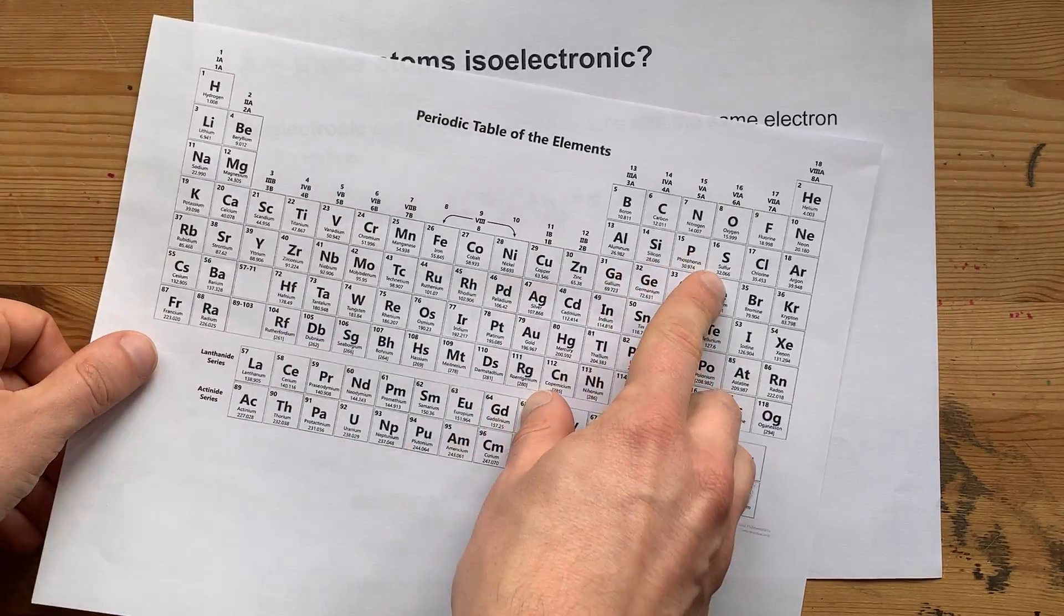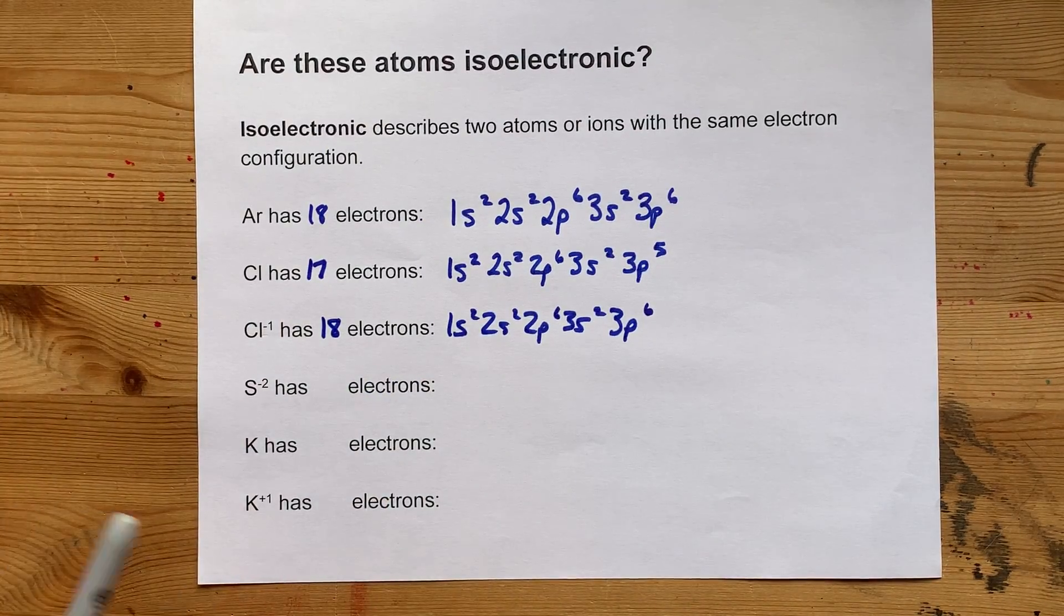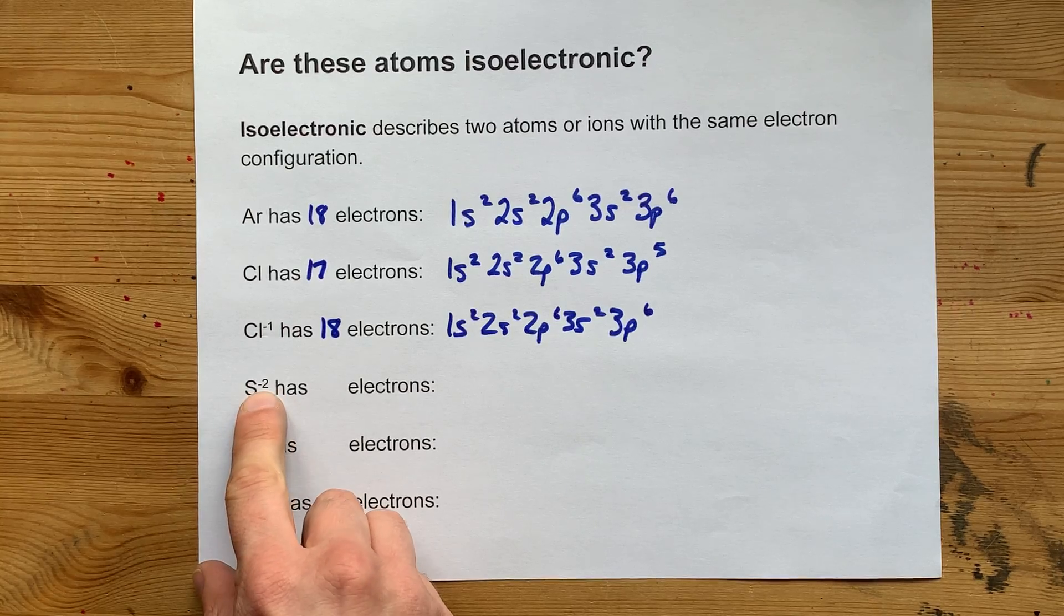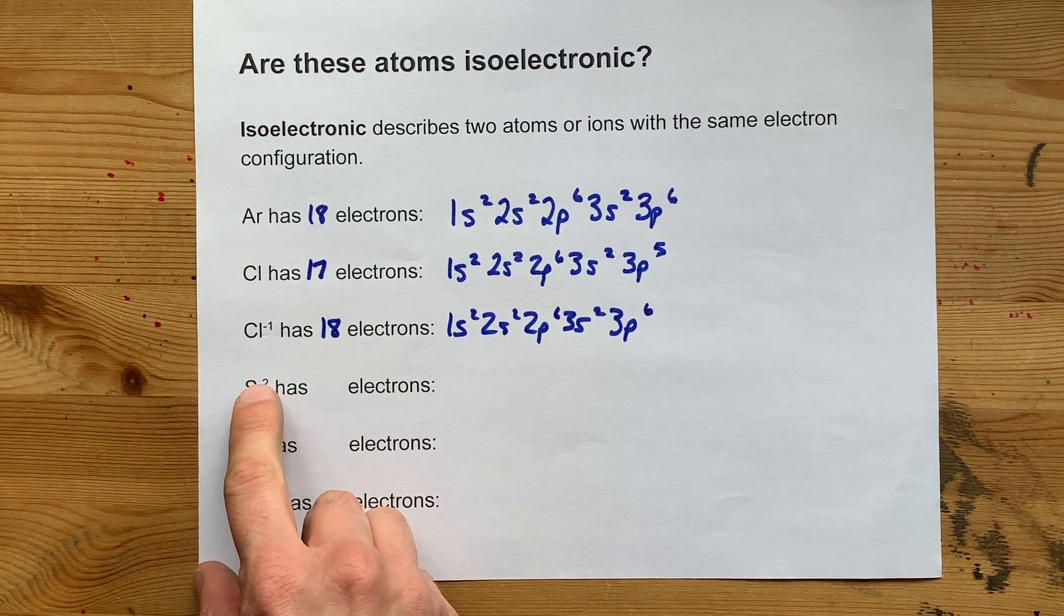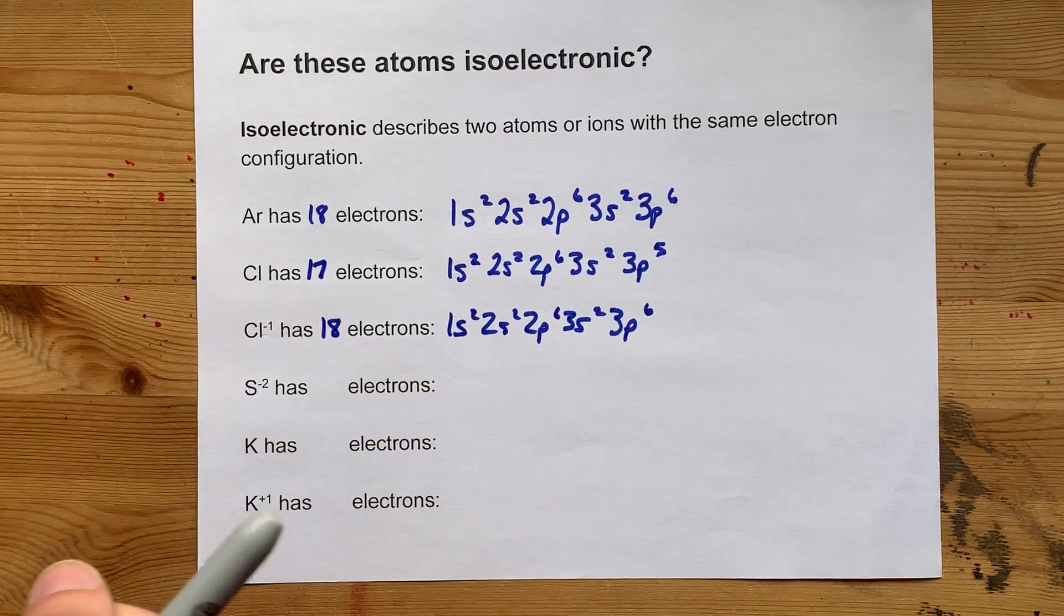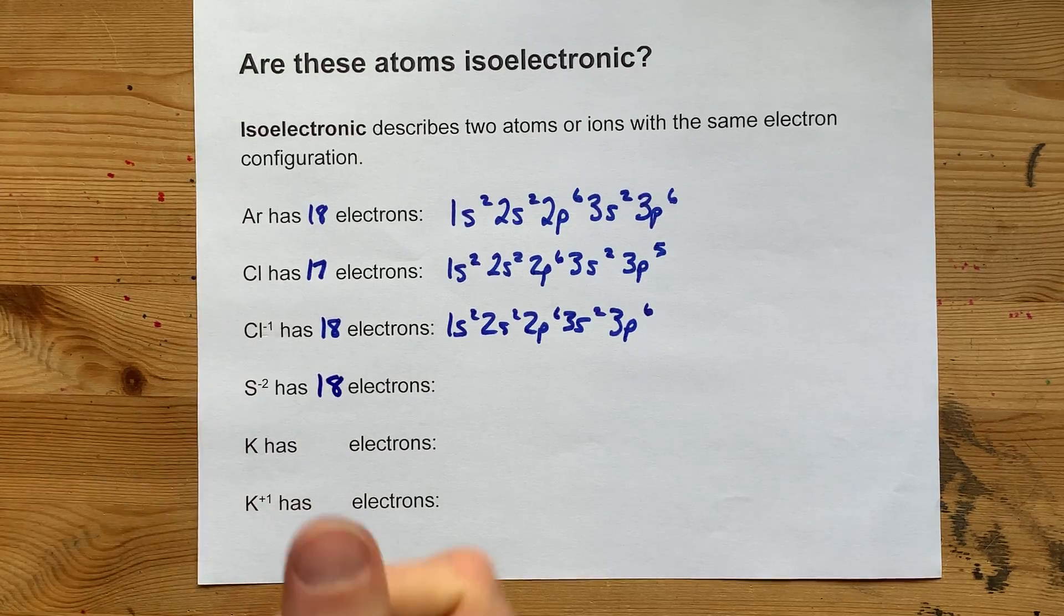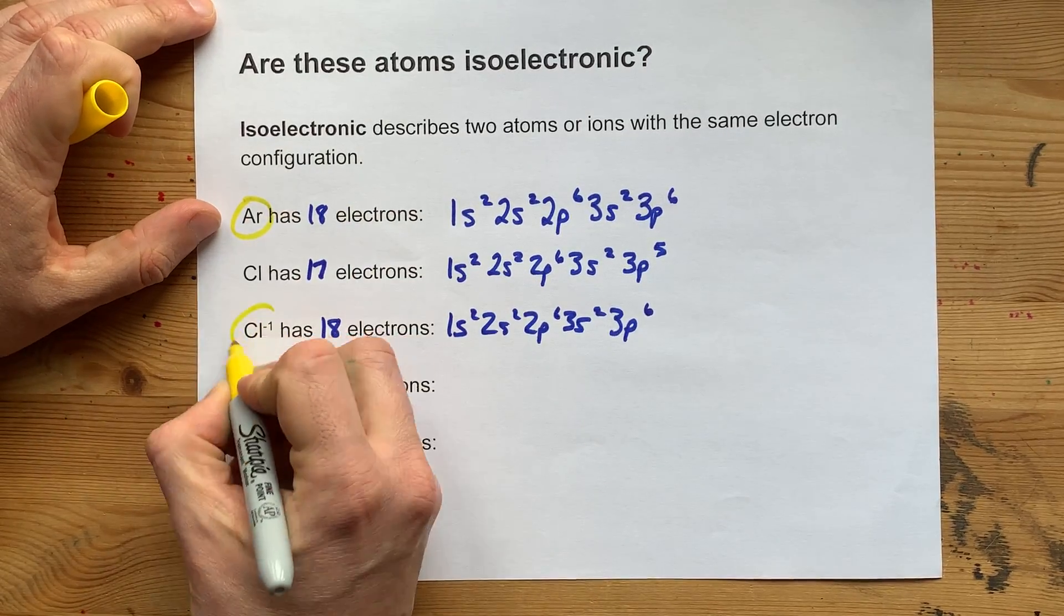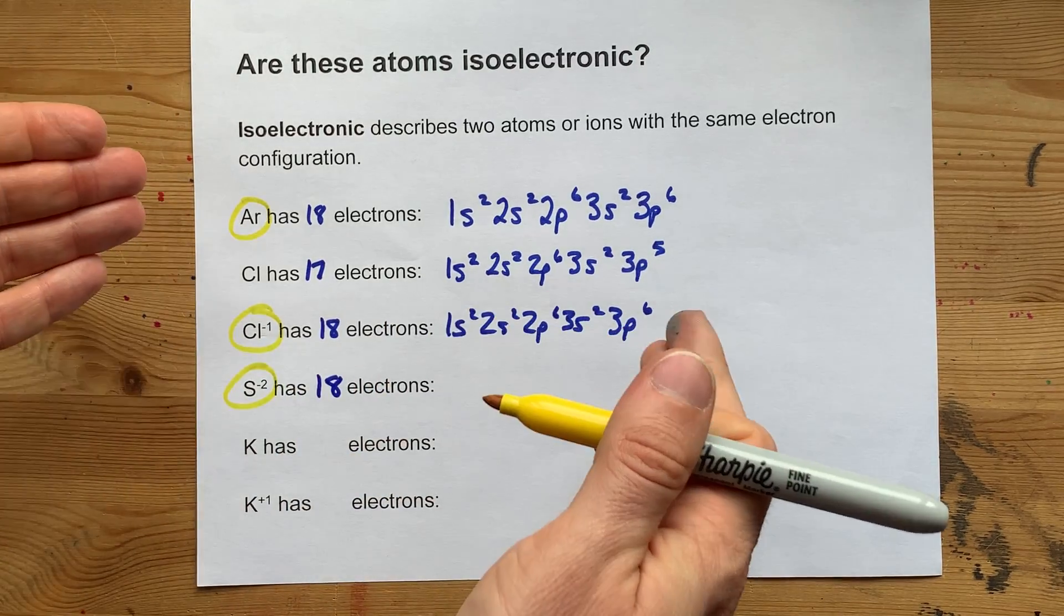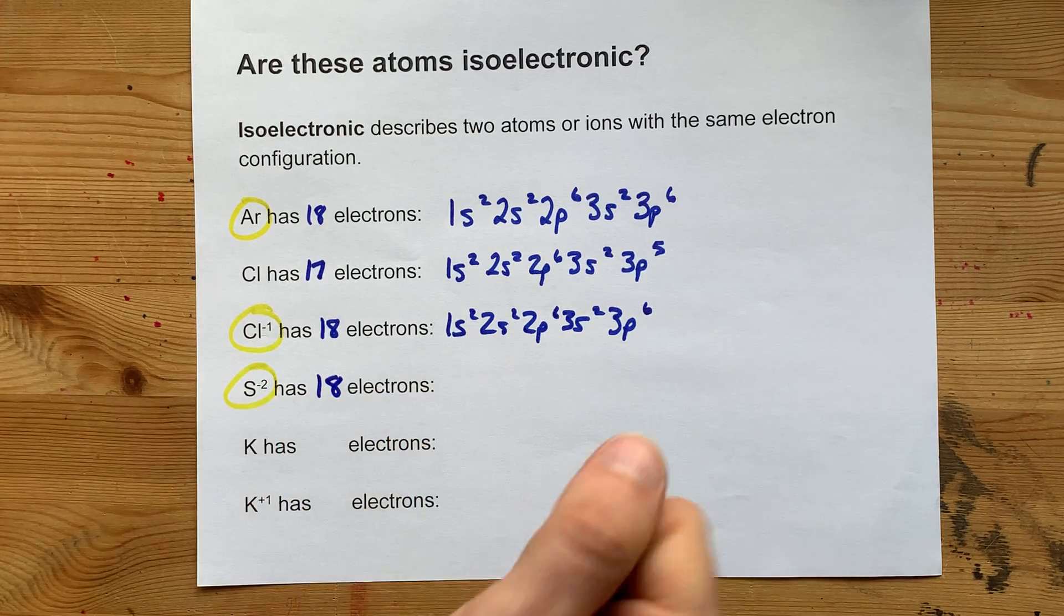Let's try S. S is 16 electrons on its own, but this particular one, sulfide, S with a -2, has a bonus two. 16 plus 2 extra electrons is also 18. So Ar and Cl- and S2- are all isoelectronic because they all have 18 electrons.